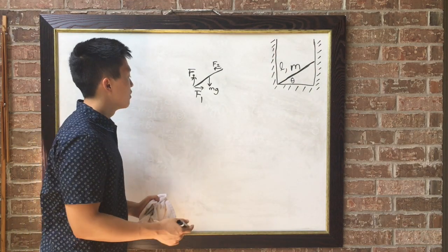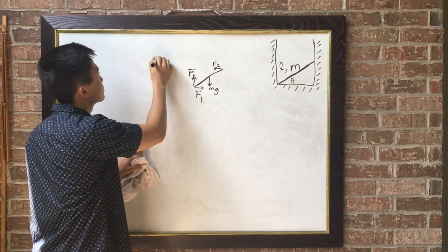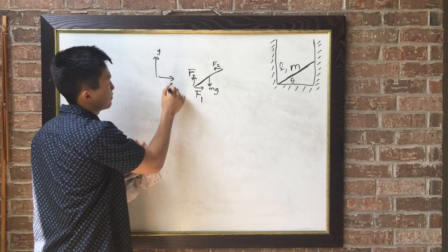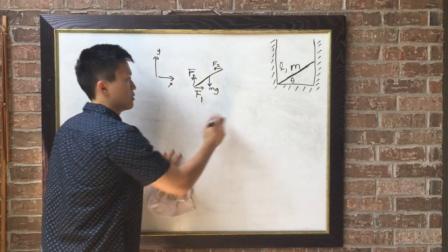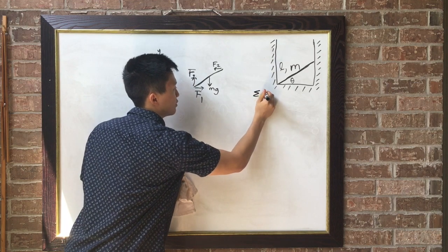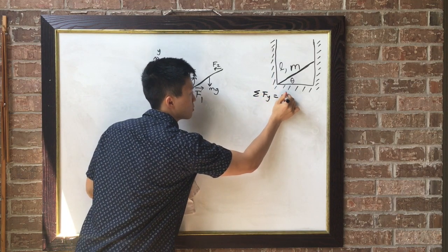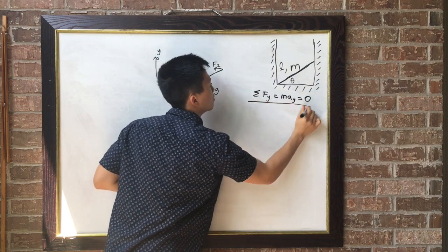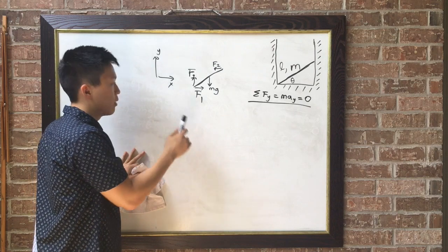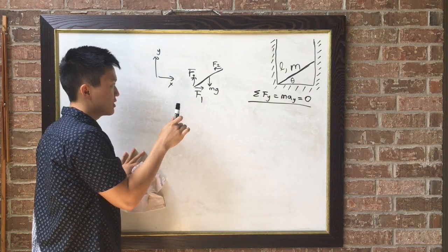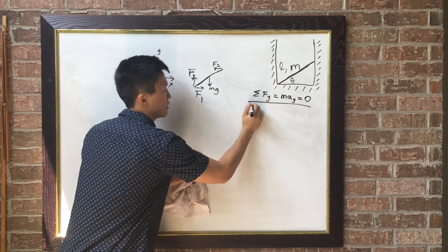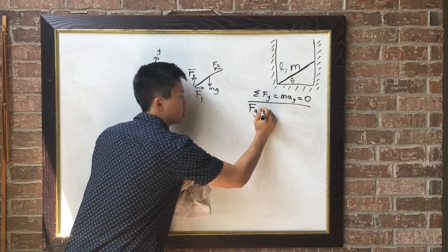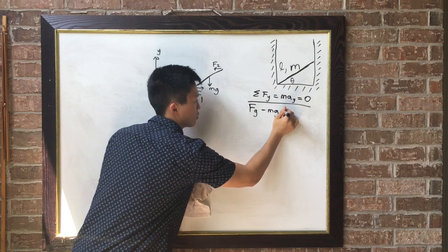Newton's second law, the y-direction. If upward force is positive, then downward force is negative. So we have F sub g, the normal force from the ground, minus mg equals zero.